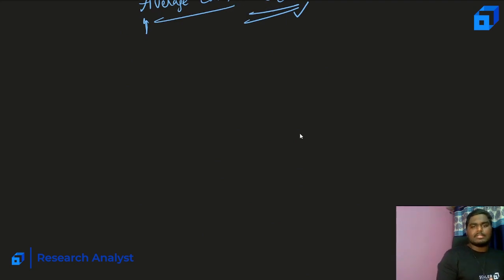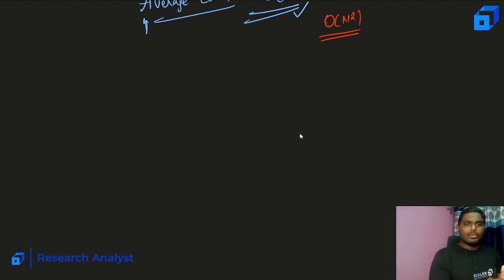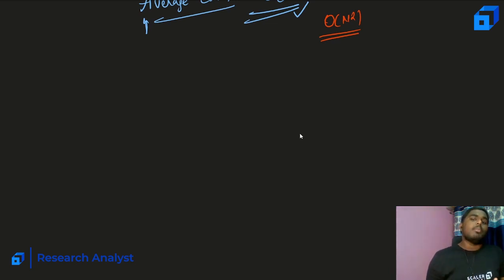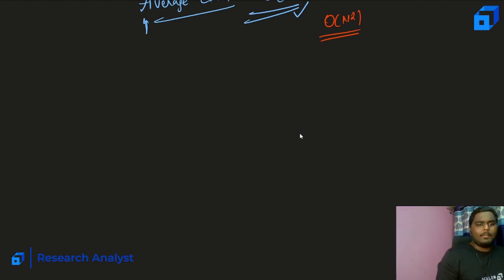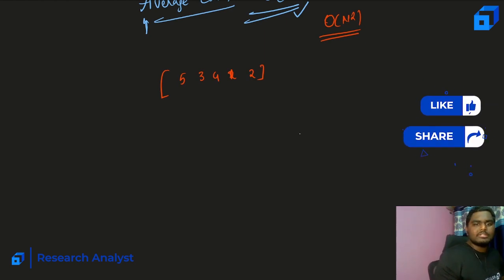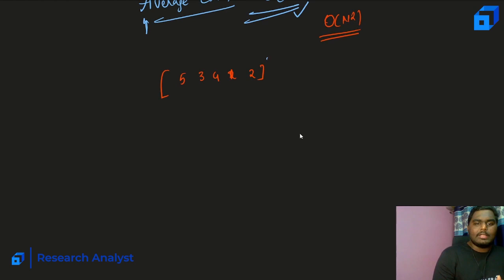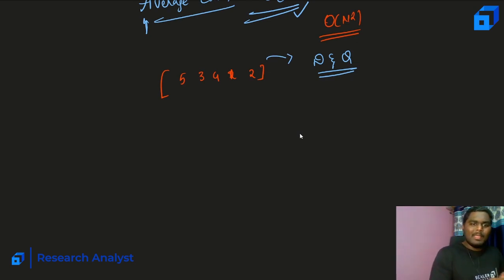Now let's see merge sort. The time complexity of bubble sort is O(n²), so in an interview the follow-up question would be: try to reduce that complexity. Here comes merge sort. Merge sort is a divide-and-conquer programming approach. We divide the array and then conquer it — that's it.